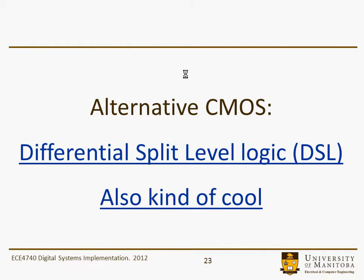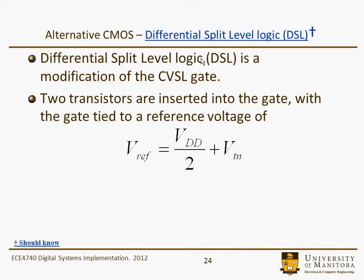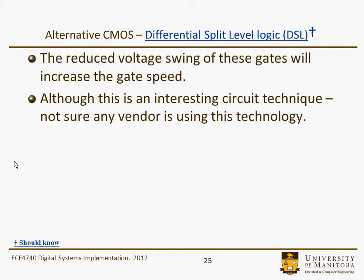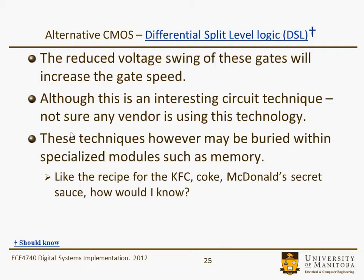Something also kind of neat is this Differential Split-Level Logic. It's also cool, though its utility is questionable. With Differential Split-Level Logic, it's a modification of the CVSL gate. Two transistors are inserted into the gate with the gate tied to a reference voltage VREF, which is VDD/2 plus VTN. These transistors limit the maximum voltage level on nodes X and X-bar to VDD/2, or approximately 2.5 volts in a 5-volt technology. This reduced voltage swing will increase the speed of the gates because we're essentially driving capacitors to half the voltage value as before. It's an interesting circuit technique, but these techniques might be buried within specialized modules such as memory — sort of like the secret recipes for KFC or McDonald's.